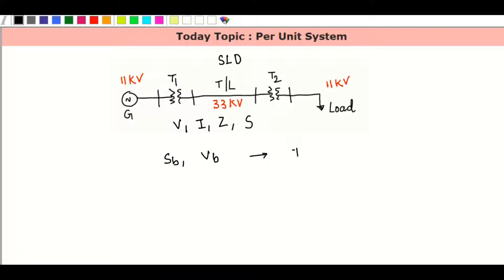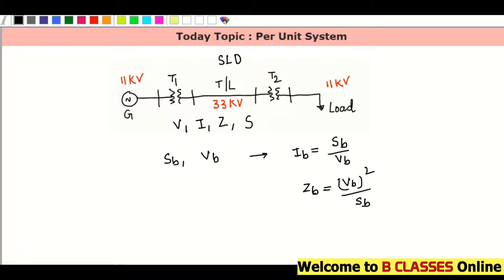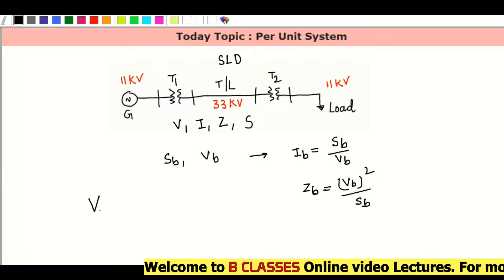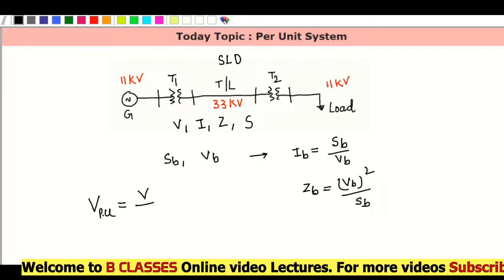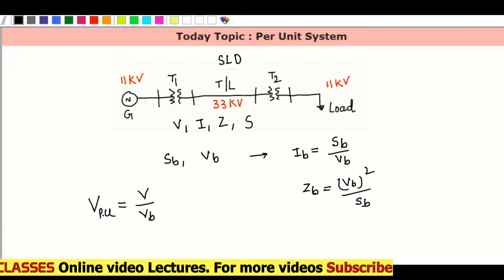In this class, I base equals S base divided by V base, and Z base equals V base squared divided by S base. So in this case, I have 4 base values and 4 actual values. Suppose you need to calculate the actual value upon base values — you need to calculate the remaining three values.